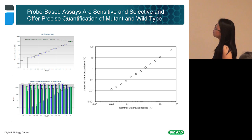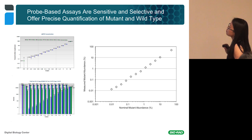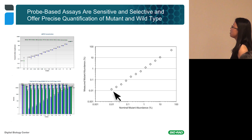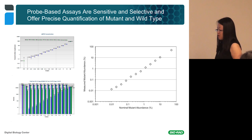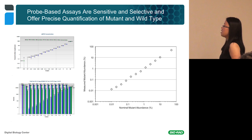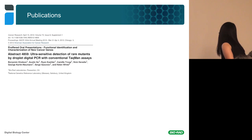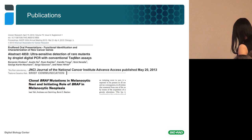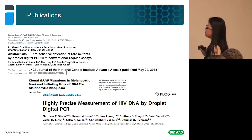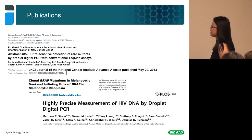Here is one example showing a titration series of a mutant under a constant background of wild type — you can see it goes down to 0.01% without any problem. For bulk PCR and real-time PCR, you can usually go to 10%, sometimes to 1%, but 0.01% is impossible. There are publications where our customers use the Droplet Digital PCR system for rare event detection, including a recent paper using our system to detect HIV DNA in a baby, proving a functional cure of HIV, which is impossible with any other technology.